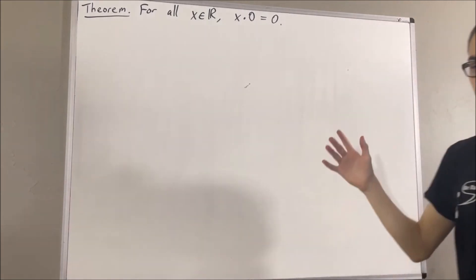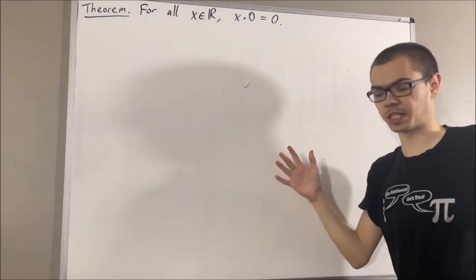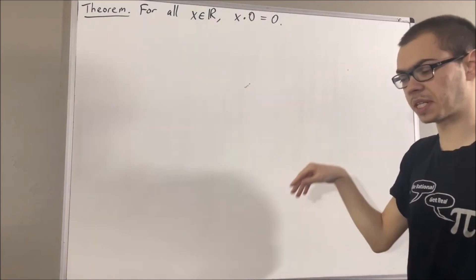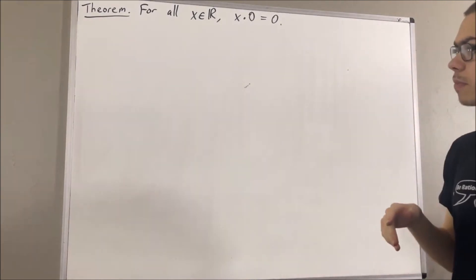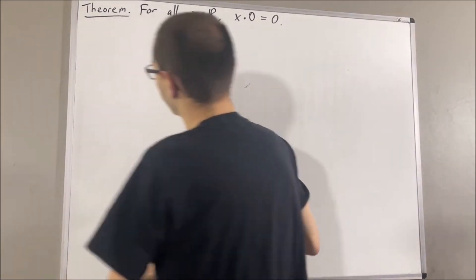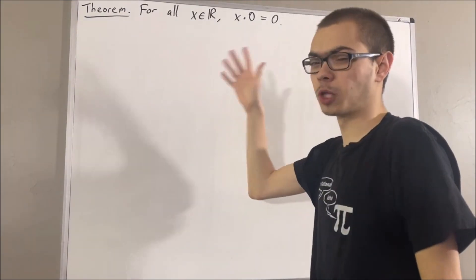Now, in this series, we are using a list of 10 axioms for the real number system, and I'll leave that list of axioms in the description of the video below. In this video, we are going to be using the following axioms.